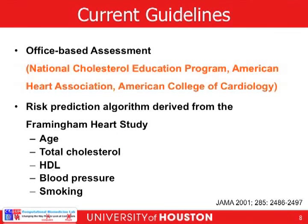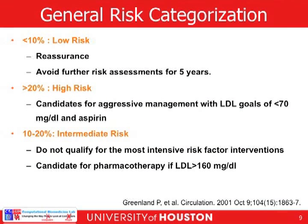How do we currently assess the risk for heart attack? This assessment is office-based, rooted in the Framingham Heart Study originating in the 1950s, and based on values of several variables: age, total cholesterol, HDL, blood pressure, and smoking. Based on these variables, an individual receives a 10-year risk score. Less than 10% is low-risk, 10–20% is intermediate risk, and more than 20% is high-risk.